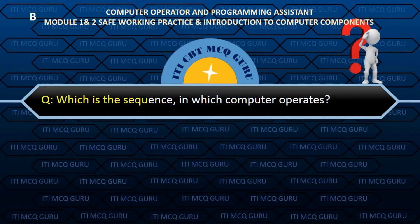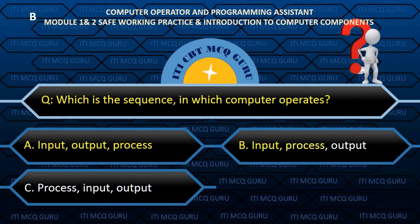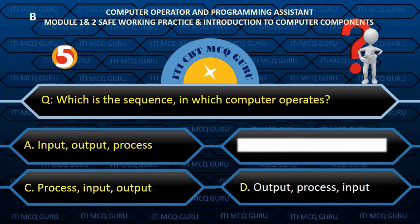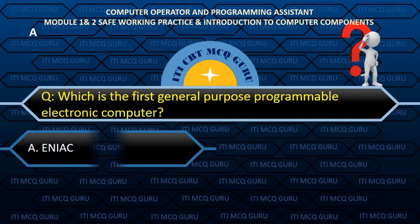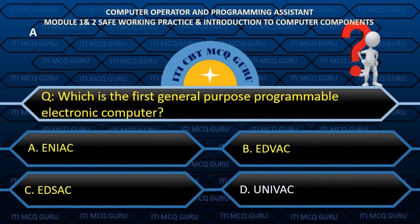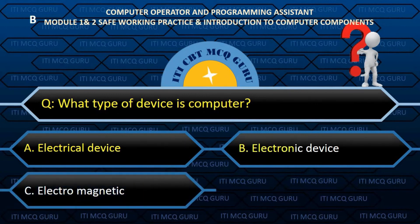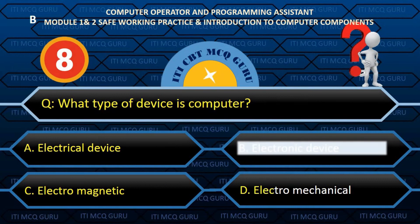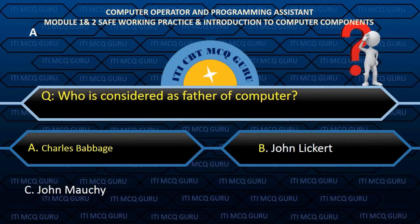Which is the sequence in which a computer operates? Answer: B. Input, Process, Output. Which is the first general purpose programmable electronic computer? Answer: A. ENIAC. Which type of device is a computer? Answer: B. Electronic device. Who is considered the father of computer? Answer: A. Charles Babbage.